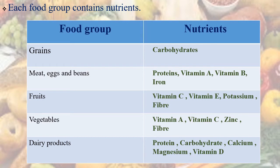Fruits contain vitamin C, vitamin E, potassium, and fiber. Vegetables contain vitamin A, vitamin C, zinc, and fiber. Dairy products contain protein, carbohydrate, calcium, magnesium, and vitamin B.